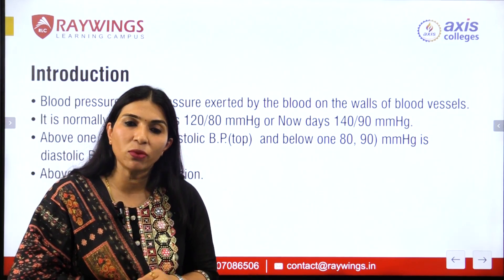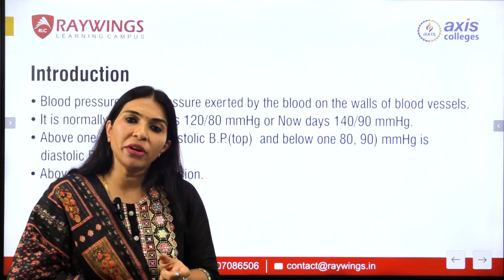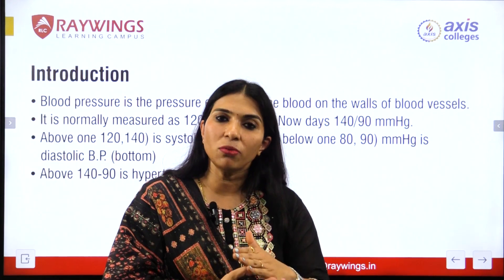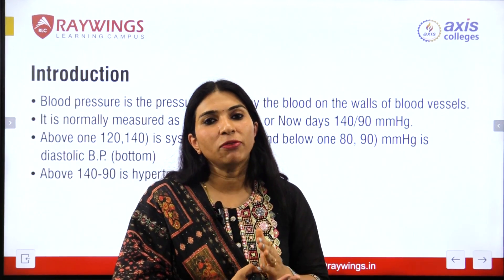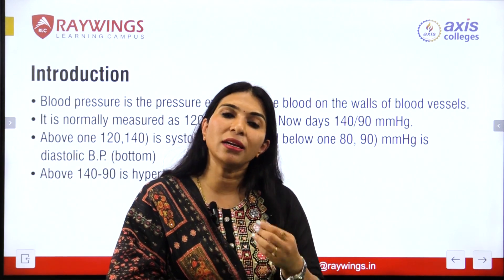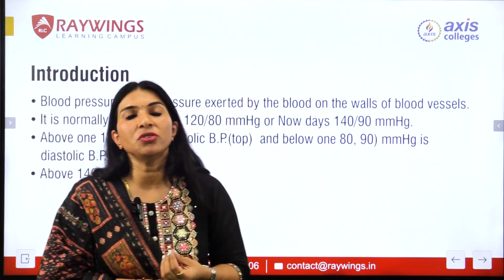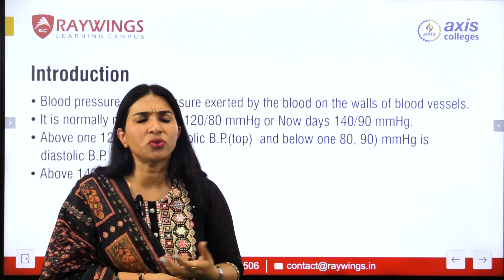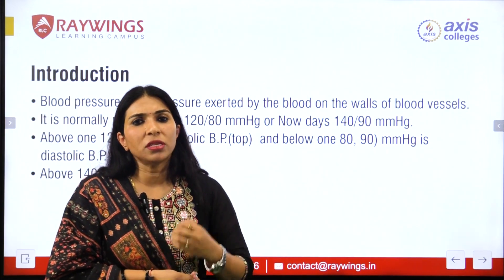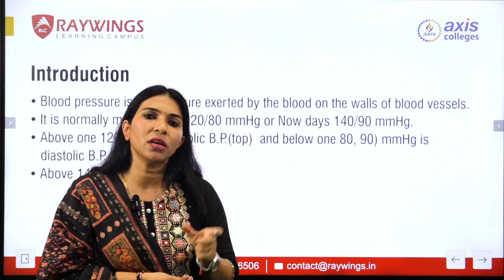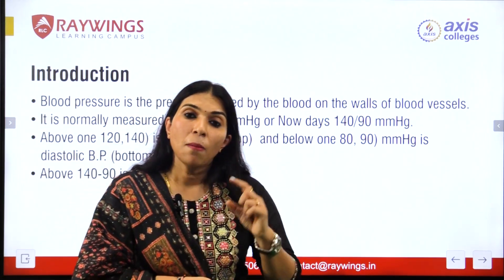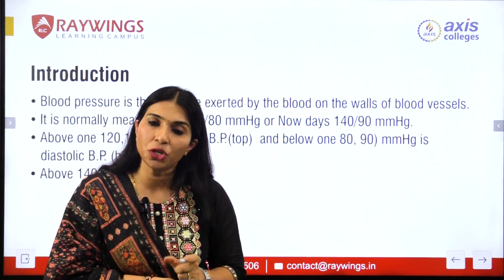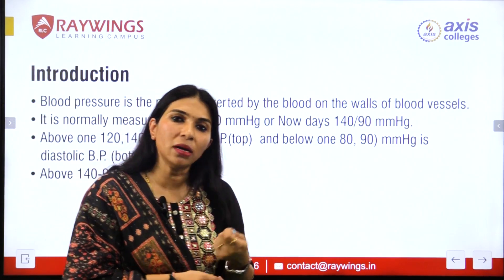The normal range is 120 over 80 — 120 is the systolic blood pressure and 80 is the diastolic. Nowadays, 130 over 90 is considered normal due to changes in our lifestyle: high cholesterol diet, smoking, drinking, stress, etc. Above 130 systolic and 90 diastolic is counted as a condition of hypertension, or increased blood pressure.